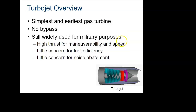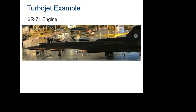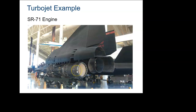Quick turbojet overview: it is the simplest and was the first jet developed. The ME-262 was the first commonly known jet aircraft. A turbojet has no bypass, high thrust, low fuel efficiency, and is very noisy. My favorite airplane, the SR-71, uses big turbojets — this thing is basically an airplane designed around jet engines. If you get a chance to see it at the National Air and Space Museum, go see it.